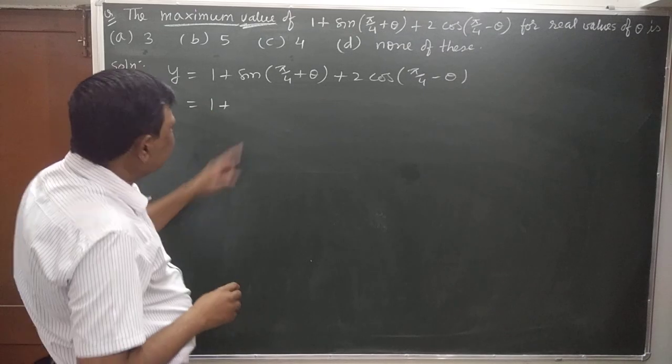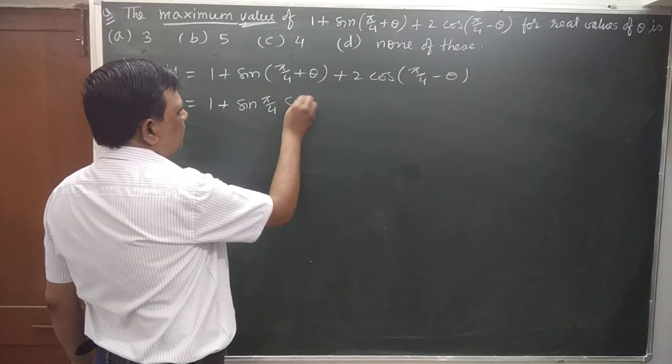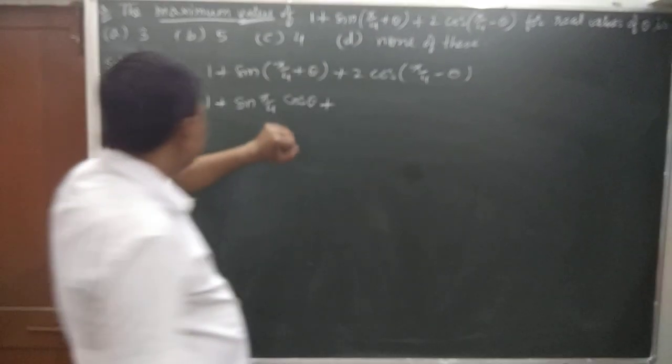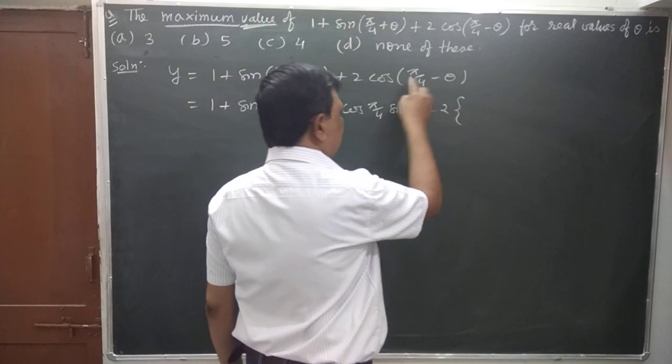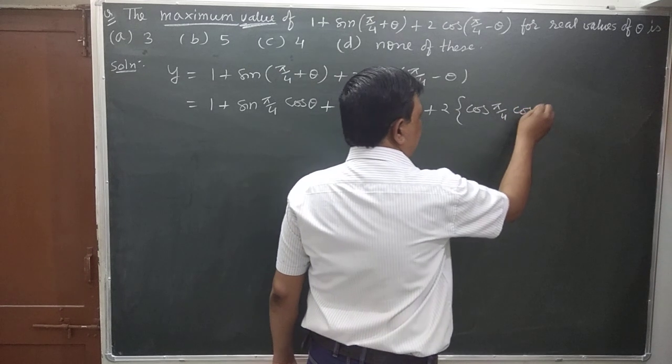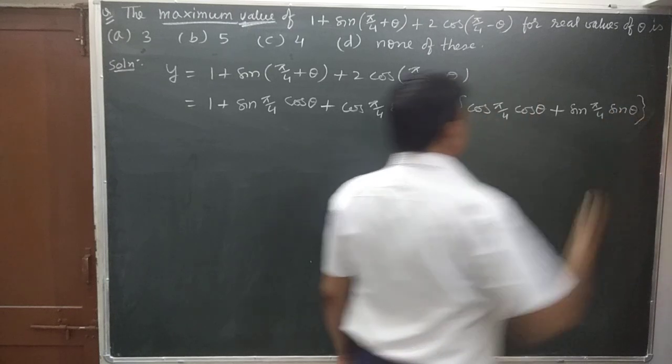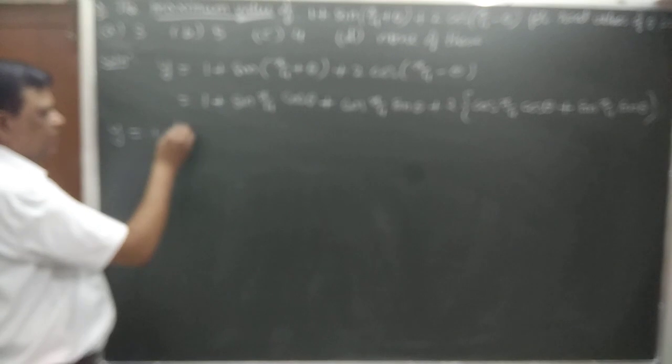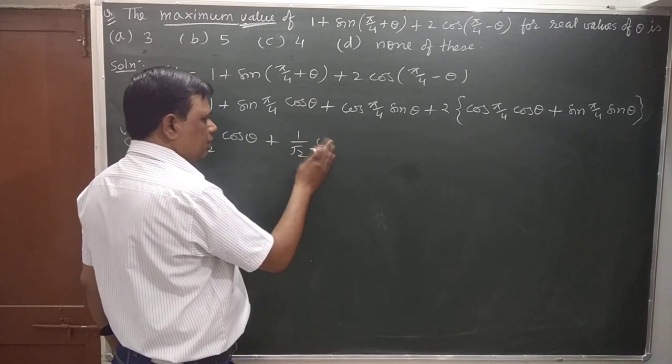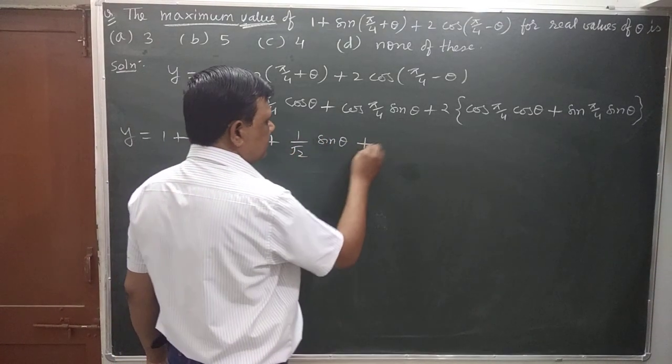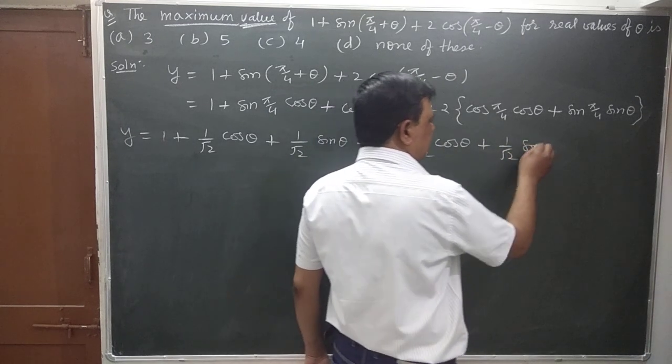y = 1 plus sin(π/4)cos(θ) plus cos(π/4)sin(θ) plus 2[cos(π/4)cos(θ) plus sin(π/4)sin(θ)] plus 2(1/√2)cos(θ) plus (1/√2)sin(θ)